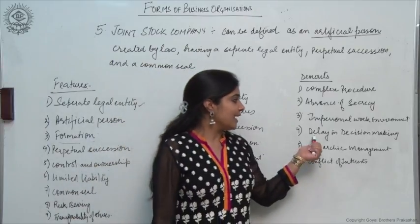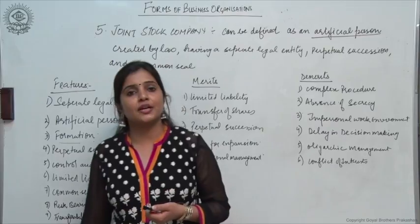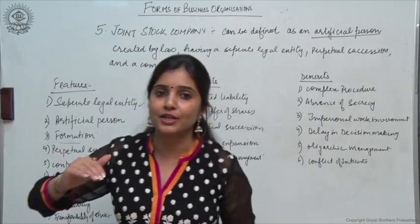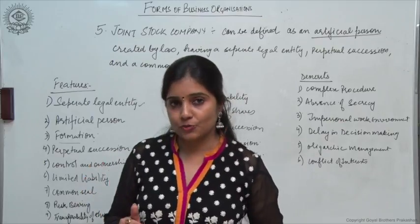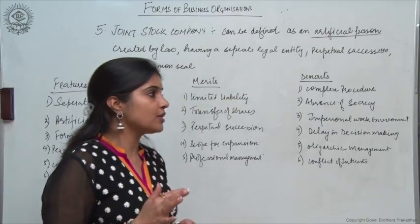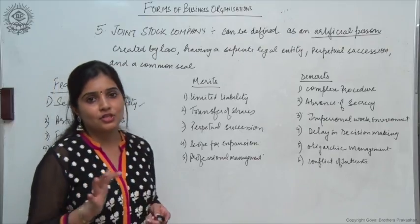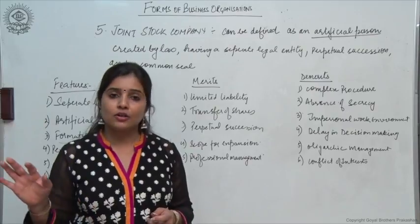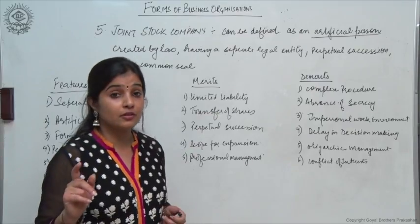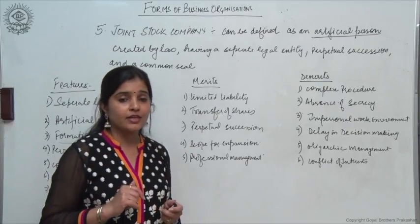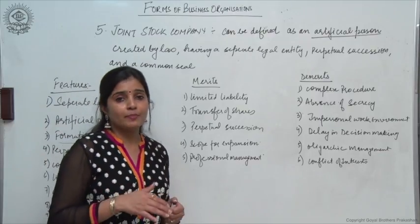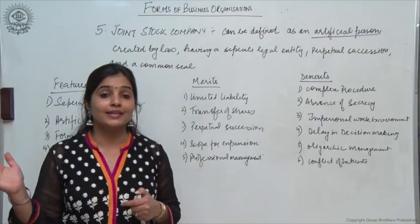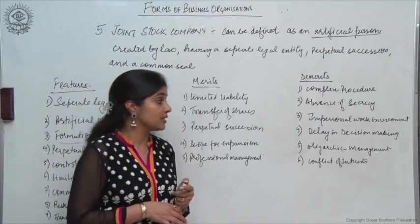Then there is delay in decision making. In a company form of organization, there are different levels — top level management, middle level management, and lower level management. When a decision has to be taken, a lot of people have to be consulted, opinions of different departments have to be taken, and different approvals obtained. So the decision making becomes a lengthy process and it takes a lot of time to arrive at a final decision.